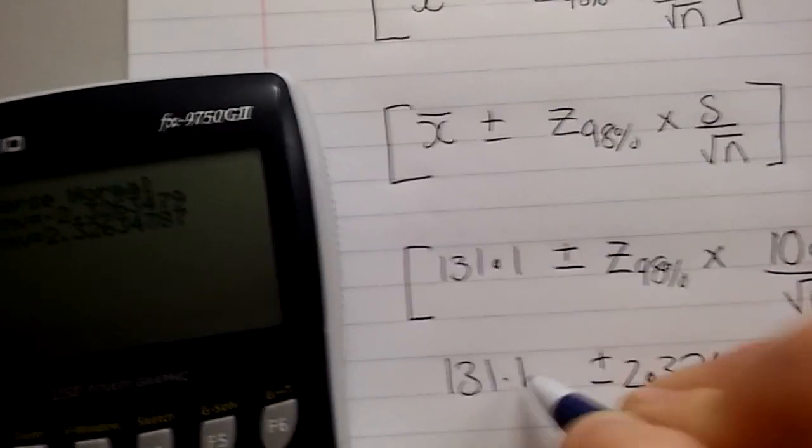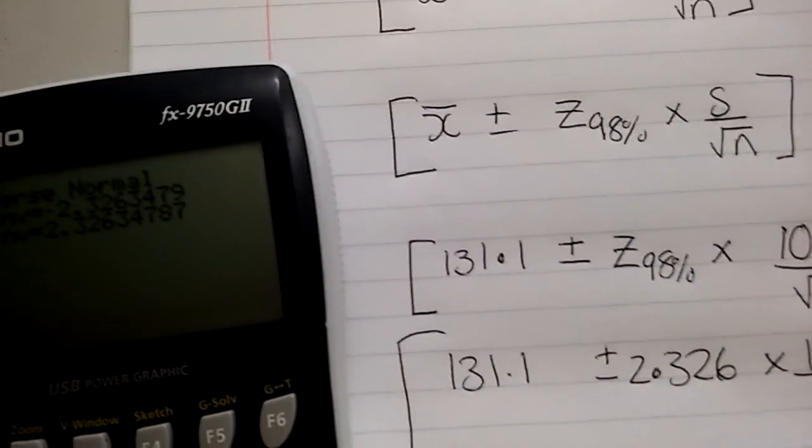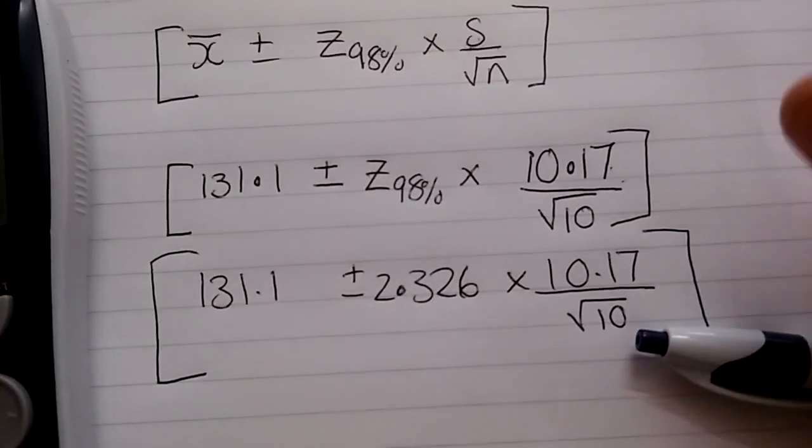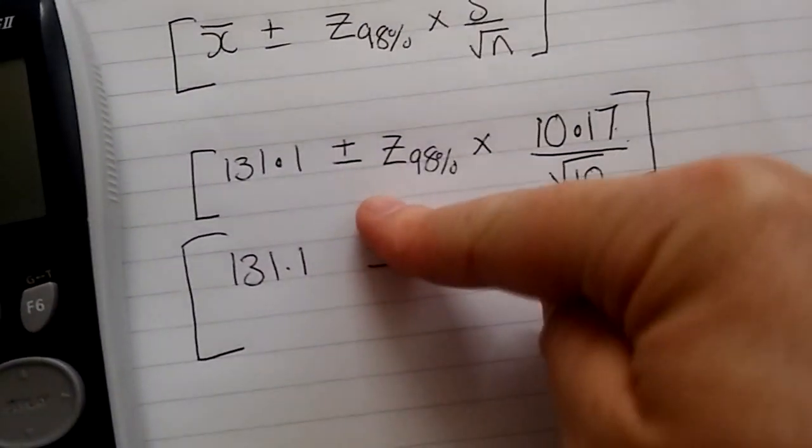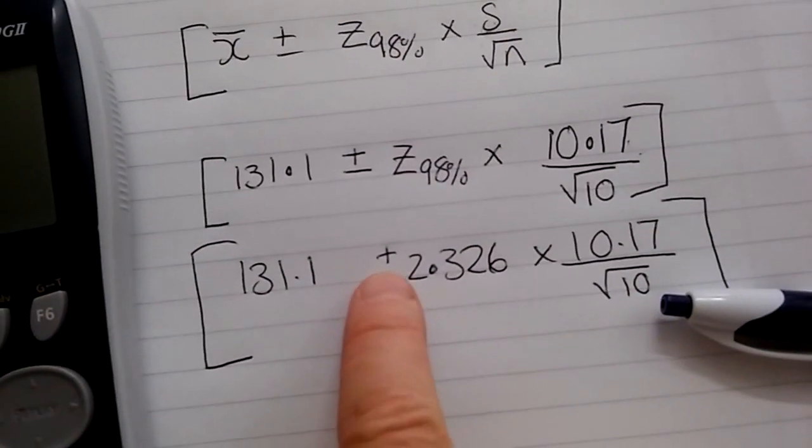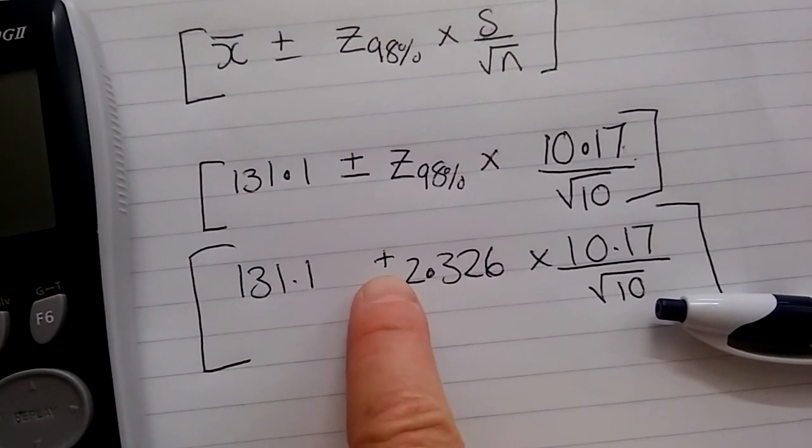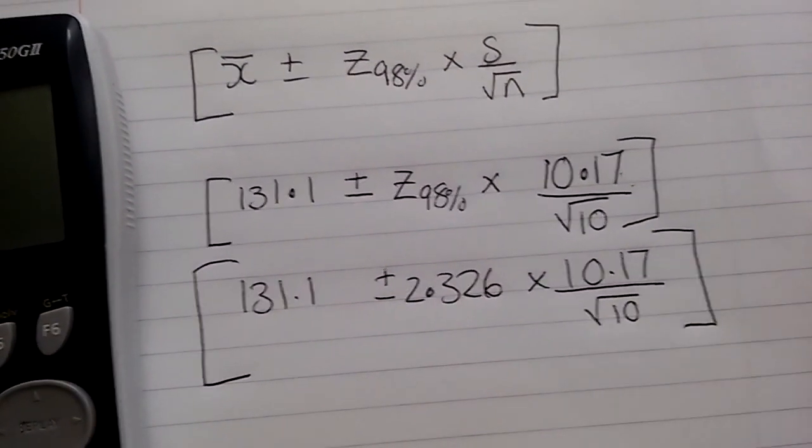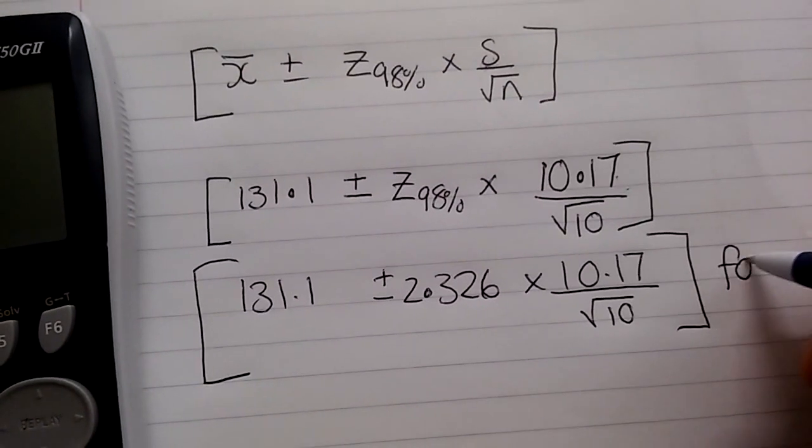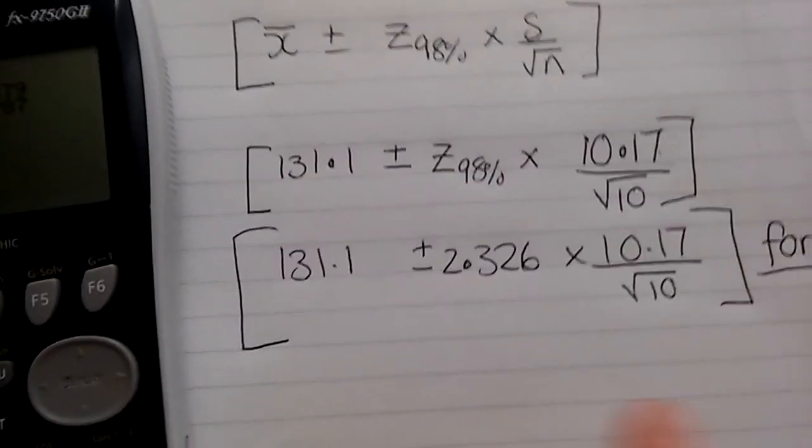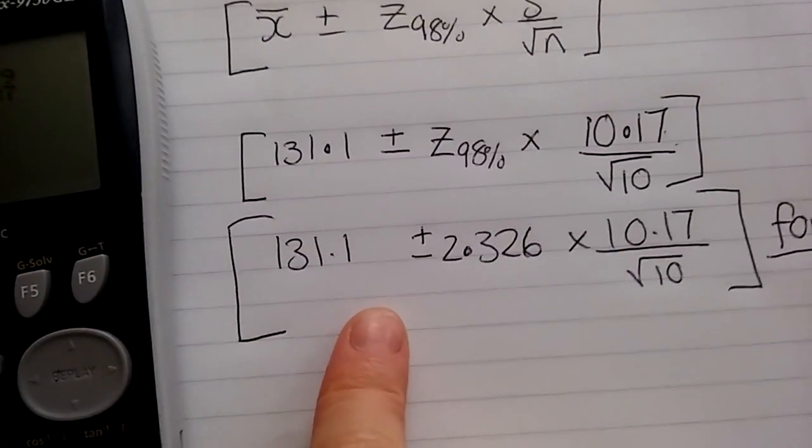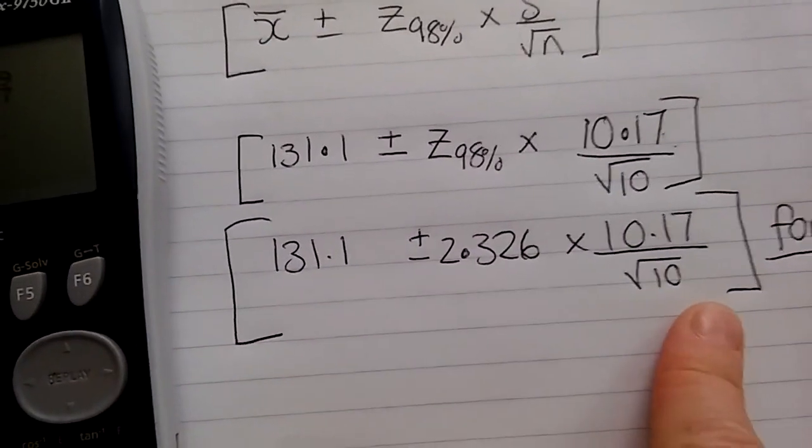And 131.1 there. Okay, now you can do this calculation in run mode, by doing it first with a minus, and then doing it second time with a plus, to get your bottom and top limit for your confidence interval. And it's a confidence interval for mu, the population mean.